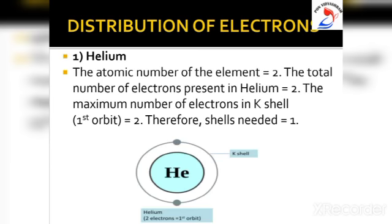This stability with 2 electrons occurs in the case of helium, which has only one shell, the K shell, in its atom. The atomic number of helium is 2, so it has 2 electrons. The maximum number of electrons in the K shell is 2, so both electrons are present in the K shell.